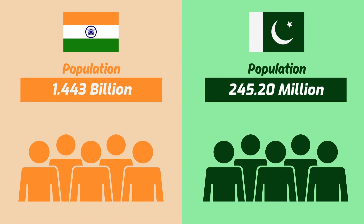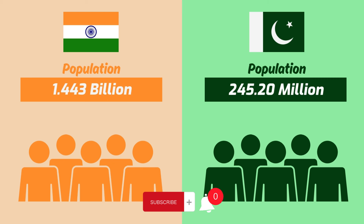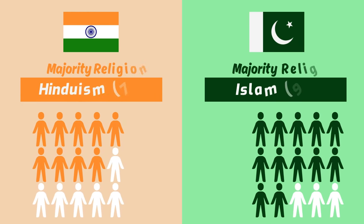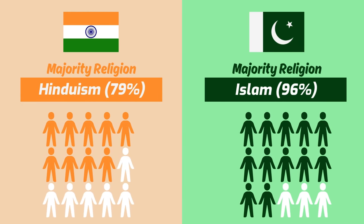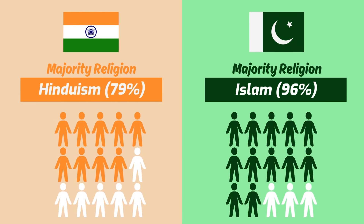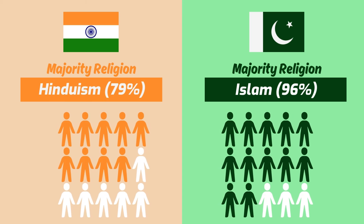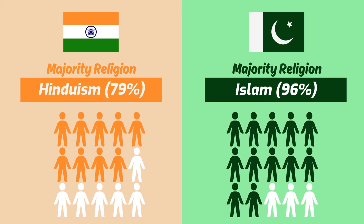Total population of Pakistan is 245.20 million while total population of India is 1.443 billion. The majority religion of Pakistan is Islam while the majority religion of India is Hinduism.